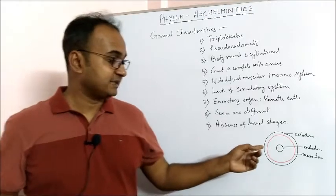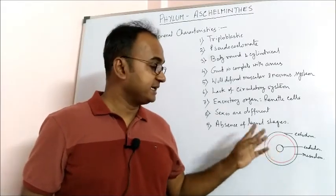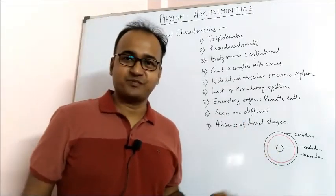If there is another mesodermic layer on endoderm, it will be called true coelomate or eucoelomate.